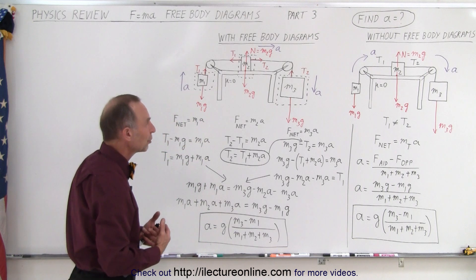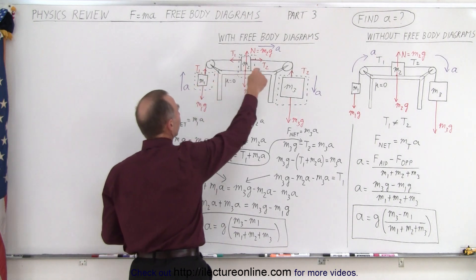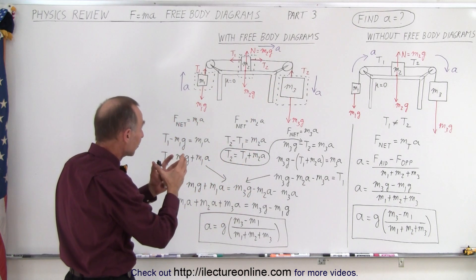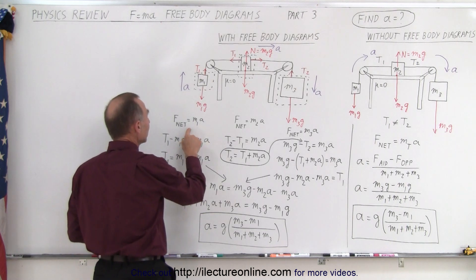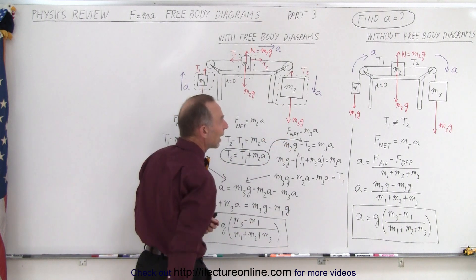But now how do you do this problem using the free body diagrams? Well, we have three of them because we have three masses. And in each case, we'll look at each free body diagram or mass separately. So we'll end up with three equations. F net equals M1A, F net equals M2A, F net equals M3A.